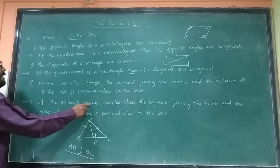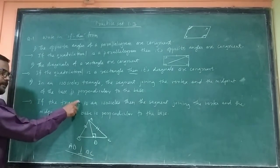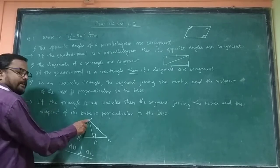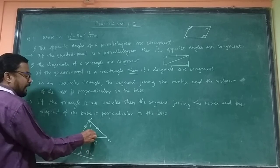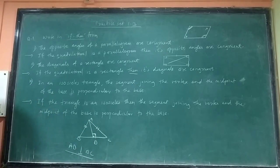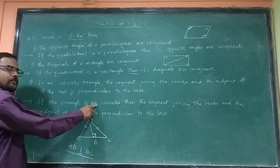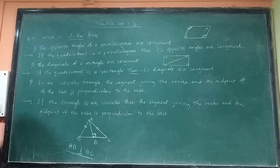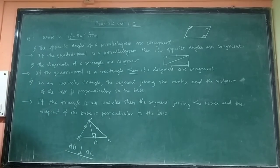If the triangle is isosceles, then the segment joining the vertex and the midpoint of the base is perpendicular to the base.